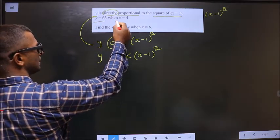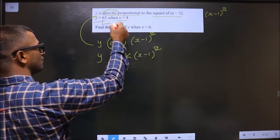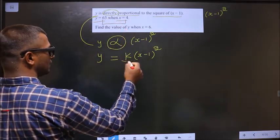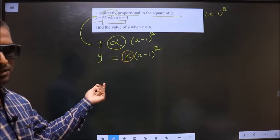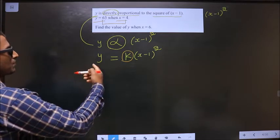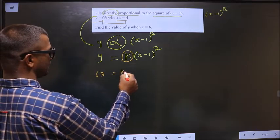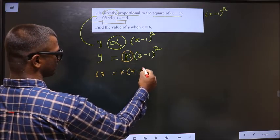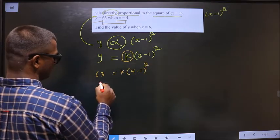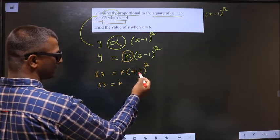y equals 63 when x equals 4. By making use of these values, I will calculate k now. Let us replace the values here. So y is 63 equals k times of x is 4. 63 equals k. 4 minus 1 is 3.